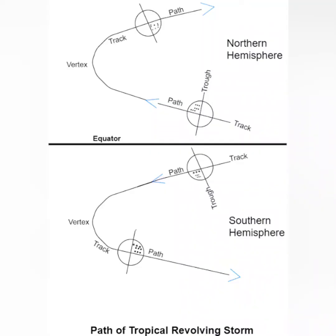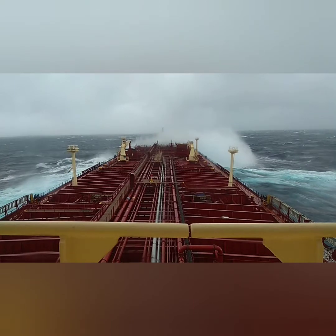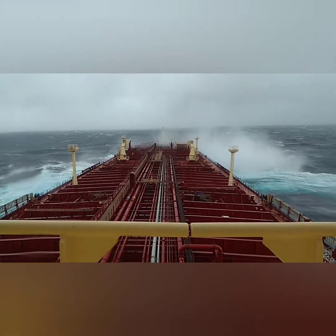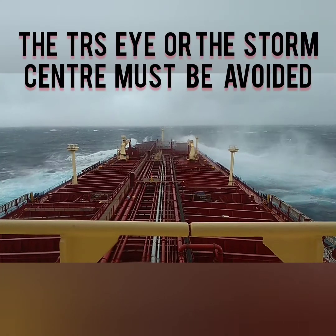The TRS follows a specific path in the northern and southern hemisphere. However we can never be sure about the vertex of the TRS. A TRS gains energy from the latent heat which is received from the condensation of moist air. Thus on hitting the land, TRS always dies out because the moisture content on land is much less than at sea. The eye of the TRS is the most dangerous point and it must be avoided.